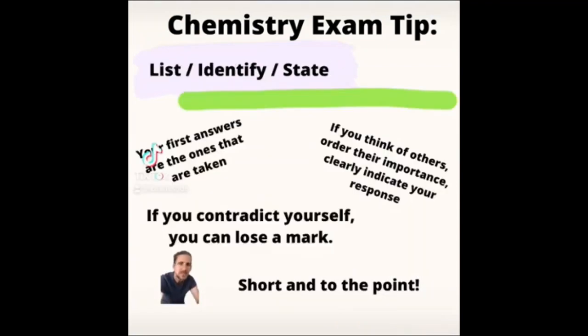Chemistry exam tip number six. About listing, identifying, or stating a specific number of things. If a question asks you to state two factors that influence something or other, make sure you only show two. Because the examiner only cares about the first two things you put down.